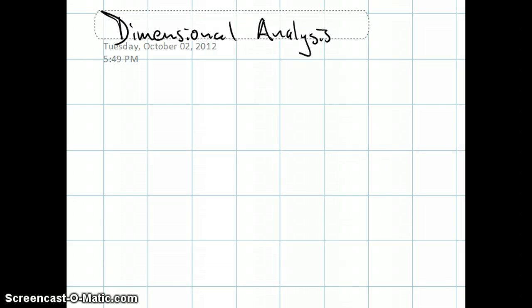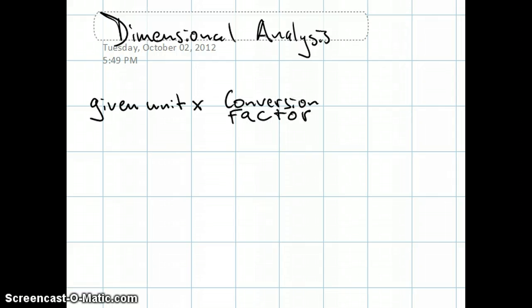This is a quick tutorial on dimensional analysis, which is a methodology to convert numbers from one unit to another. You start out with the quantity expressed in your given units, then you multiply by a conversion factor, and you wind up with the quantity in your desired units.